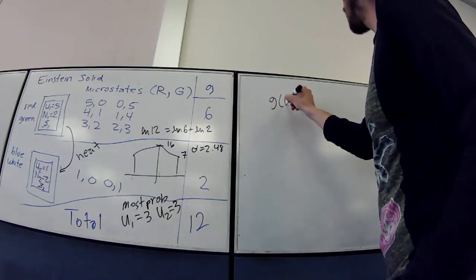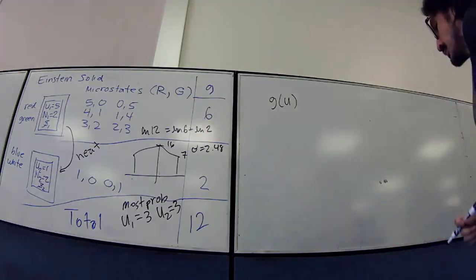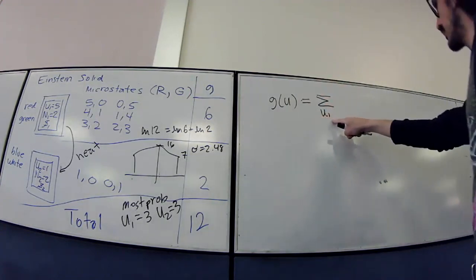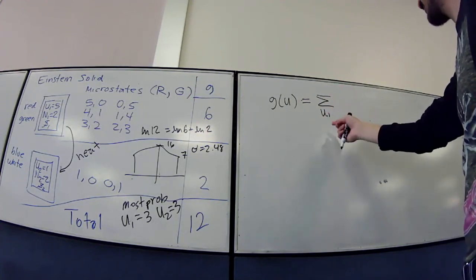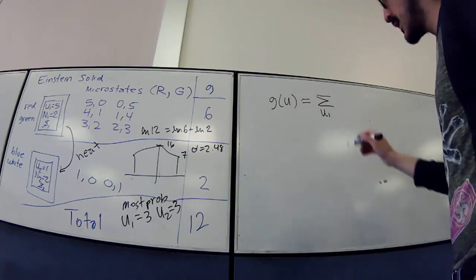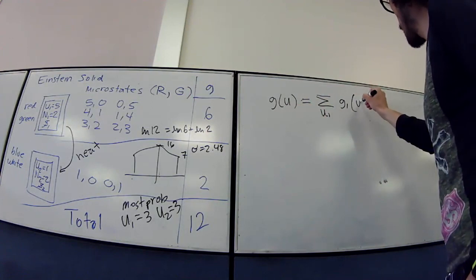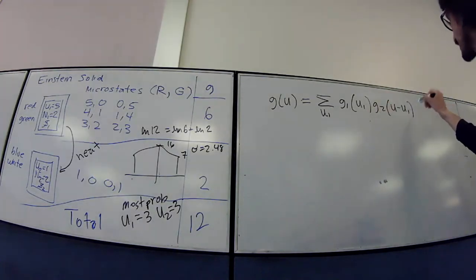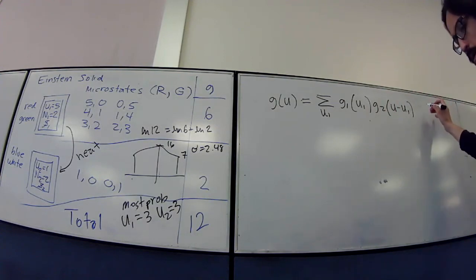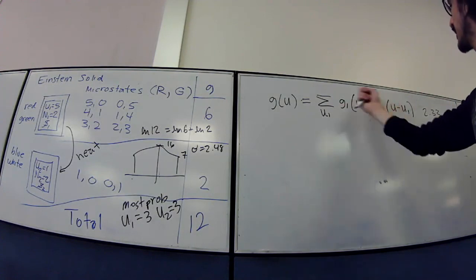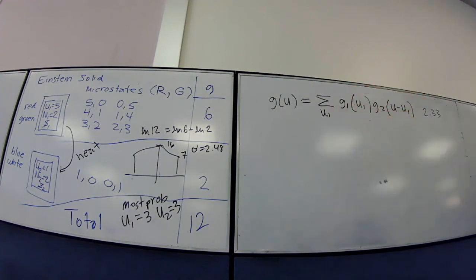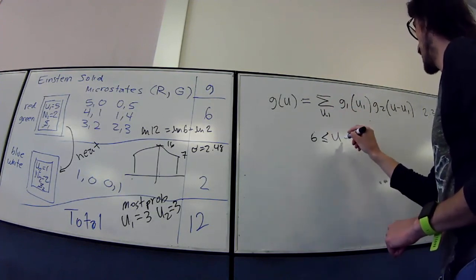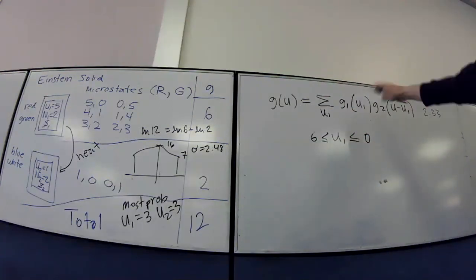The multiplicity of the two combined systems equals the sum over all possible u₁ values of g₁(u₁) × g₂(u − u₁), since u₂ = u − u₁. This is equation 2.33. This is exactly what we did: summing all possible multiplications for all values of u₁ from 6 to 0. The original configuration g₁(u₁⁰) × g₂(u − u₁⁰) is just one of the terms included in this sum — which is why combining systems always increases entropy.